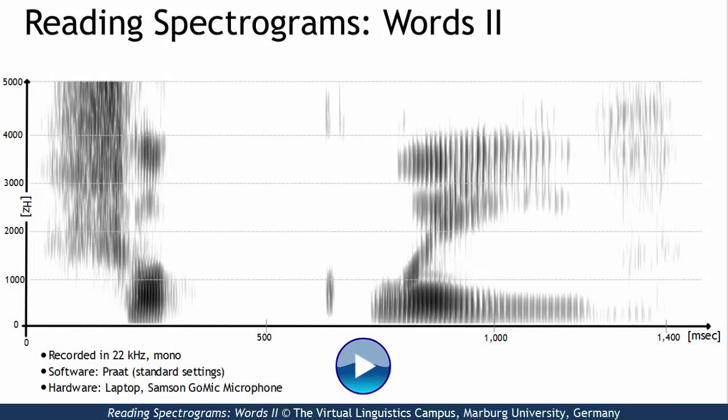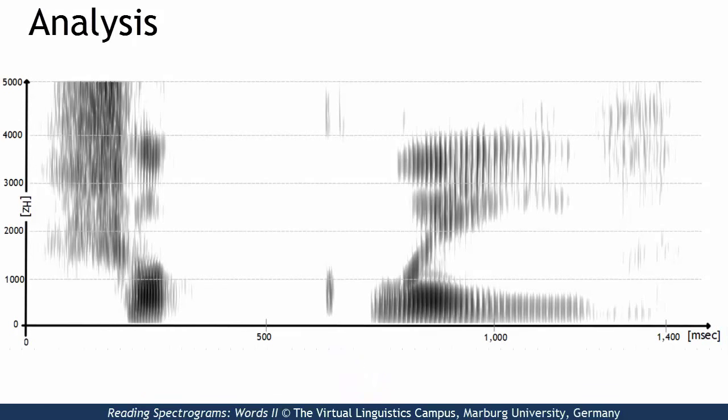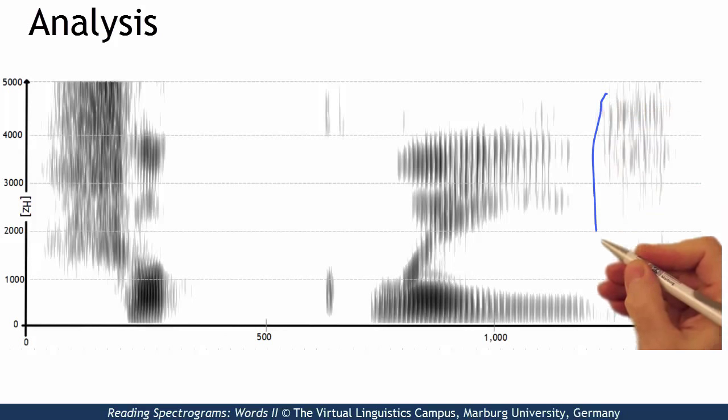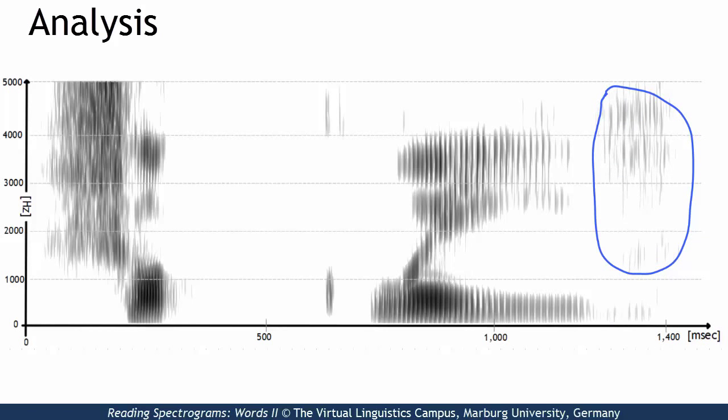Alright, here is my analysis. Clearly, we can identify two portions of friction noise. At the end, we can see a relatively faint portion with a visible but decaying fundamental frequency. So this must be a voiced fricative that becomes partly devoiced.